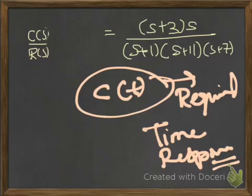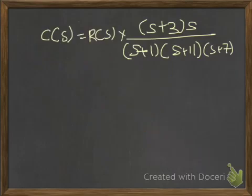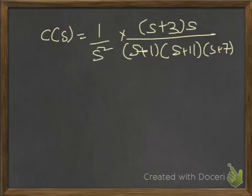The first thing you're going to do is send R(s) to the right-hand side, and that is exactly what we are going to do. So now we have C(s) equal to R(s) · (s + 3) · s divided by (s + 1)(s + 11)(s + 7). For a unit ramp signal, R(s) is 1/s².